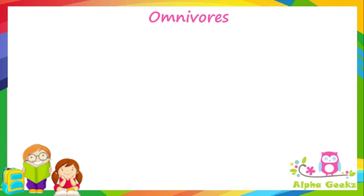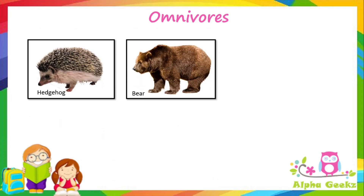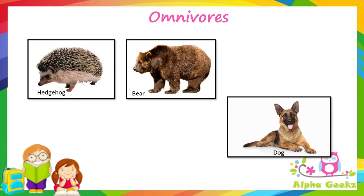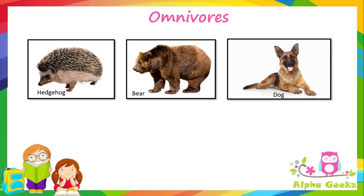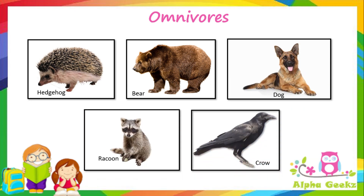Some examples of omnivores include hedgehog, bear, dog, raccoon and crow.